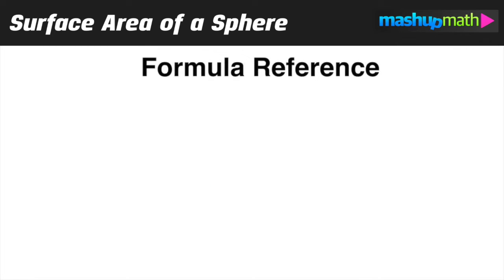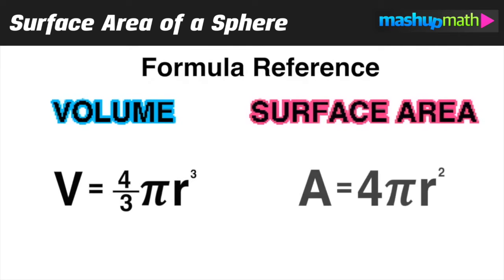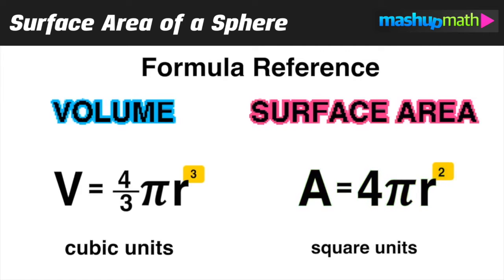There are two formulas we are going to reference to find volume and surface area of a sphere. The formula for volume is 4 over 3 pi r cubed, and the formula for surface area is 4 pi r squared. Notice the exponents: volume is cubed, surface area is squared. When we express an answer we have to use appropriate units — volume is in cubic units and surface area is in square units, which correlates with the exponent in each formula.